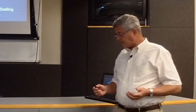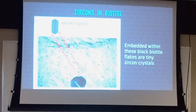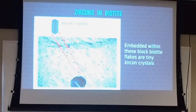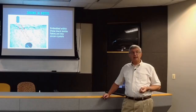What are radiohalos? Let's start by talking about the mineral biotite in granites. Most granites contain this black flaky mica mineral called biotite. It's very common in most granites and easily seen because of its black colour. Within these biotite flakes, zircon crystals are often embedded. Zircon is zirconium silicate - silica with zirconium. Because uranium has a similar ionic radius and charge to zirconium, it can substitute into the lattice of zircon. So most zircons are radioactive with uranium, and therefore of interest to geologists for radiometric dating.